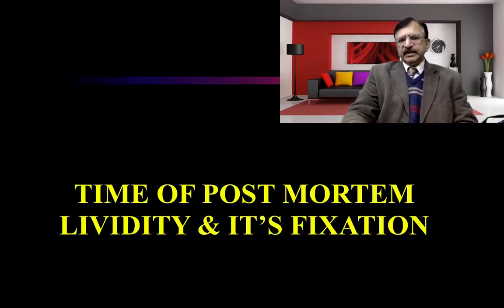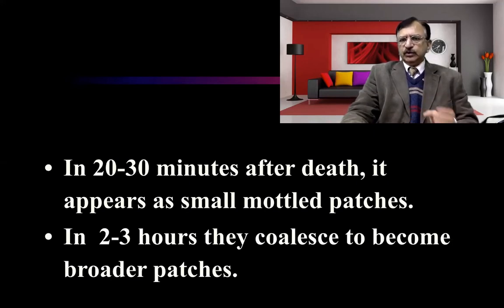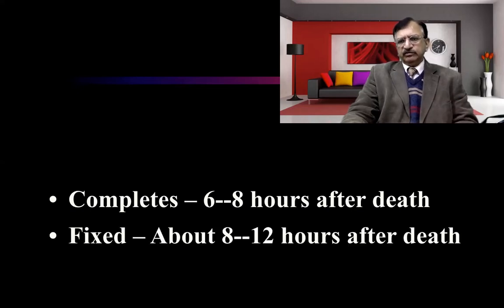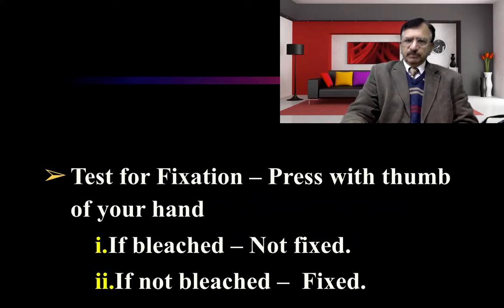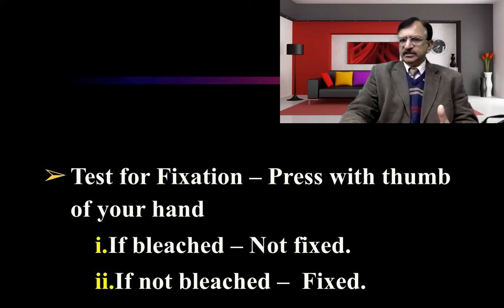Regarding the time of post-mortem lividity and fixation: within the initial 20 to 30 minutes after death, it appears as small mottled patches on the dependent areas. In two to three hours, these coalesce to become broader patches. In six to eight hours, it is complete, and it is fixed in eight to 12 hours. The test for fixation is to press with the thumb — if the area bleaches, hypostasis is not fixed; if it does not bleach, it is fixed.